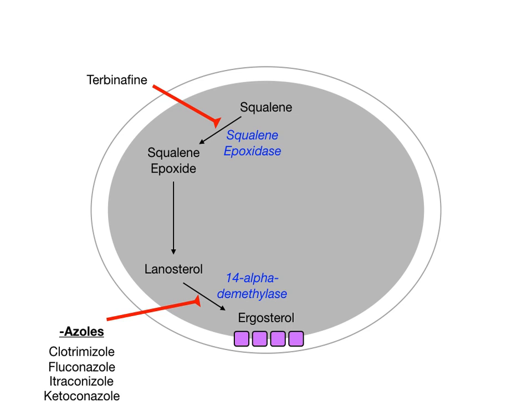Now let's talk about some other aspects of the fungal cell and additional antifungals. Just like humans, there's the plasma membrane, but there's also an outer cell wall. That fungal outer cell wall starts with components called beta-glucans. These beta-glucans need to be activated from within the fungal cell and then transported through the plasma membrane out to the cell wall. The enzyme that activates these beta-glucans and finalizes them as they move out to the outer cell wall is called beta-glucan synthase.